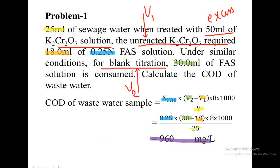Upon substitution into the formula — normality of FAS into (V2 minus V1) into 8 into 1000 divided by V — you will get 96 mg per liter. You have to identify the normality of FAS, then identify the blank titration value which is always V2, and the back titration value which is generally given as unreacted potassium dichromate, that is V1. The volume of water taken for analysis goes in the denominator. This is a direct substitution problem.